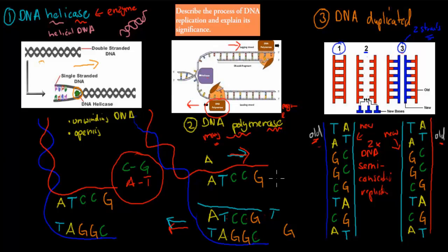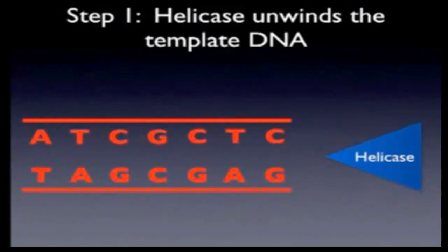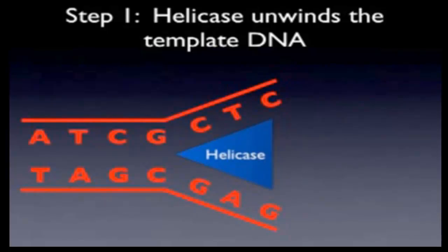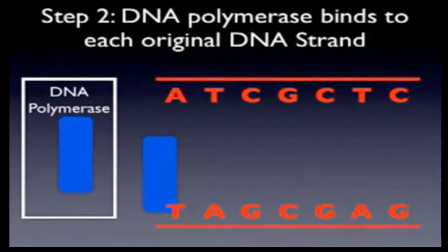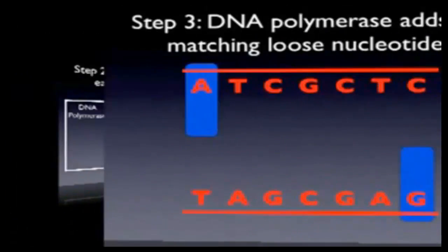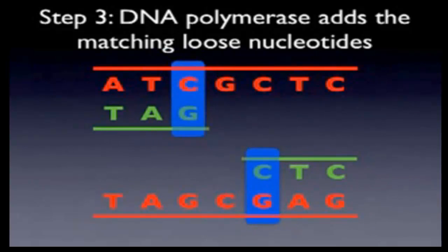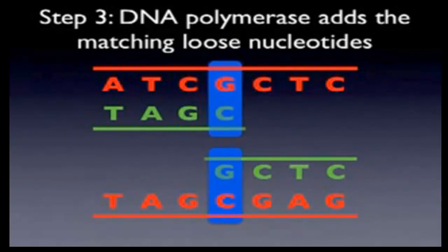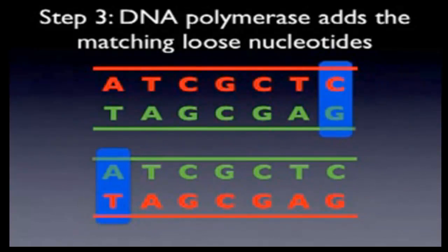I'm going to show you a quick animation and then go over the significance. Let's look at this animation of DNA replication. First we have DNA helicase, which unwinds the DNA. Then we have two separate strands. After that we have DNA polymerase, the enzyme that binds the complementary nucleotides — you can see on opposite strands the nucleotides attaching to form two new strands of DNA, with nucleotides grabbed from the surrounding area.